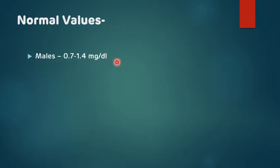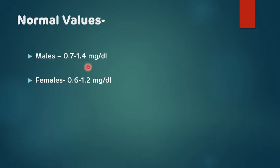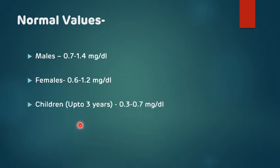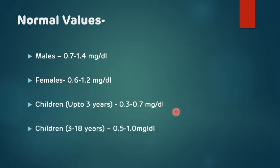The normal values of serum creatinine are: in males, 0.7 to 1.4 mg/dL; in females, 0.6 to 1.2 mg/dL. The values in females are less compared to males because serum creatinine values depend on muscle mass. In children up to three years of age it is around 0.3 to 0.7 mg/dL, and in children from three to eighteen years it is 0.5 to 1 mg/dL.